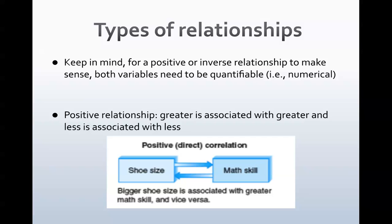For example, the bigger shoe size you have, the greater math skill you have. It seems absurd, but this is likely the case for most people—because as we get older, we gain more math skills and we also have bigger feet. So there is a positive correlation—or direct correlation, though I'll call it positive for this course—between shoe size and math skill. You could also say the same correlation exists for shoe size and age: the bigger shoe size, the greater age. So the greater is associated with greater.